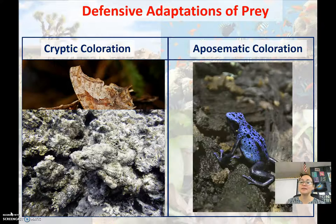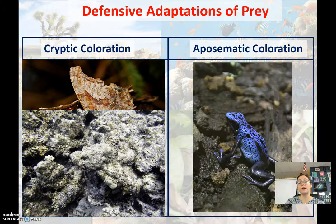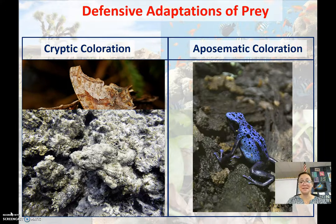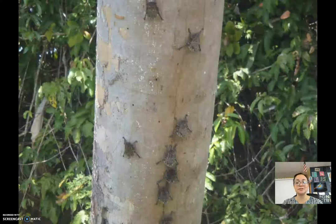The opposite of camouflage is aposematic coloration — some species have evolved bright warning colors. This is like a warning symbol to the predator: I'm poisonous, so stay away. Bright warning colors have evolved to help the prey stand out and help the predator make decisions.